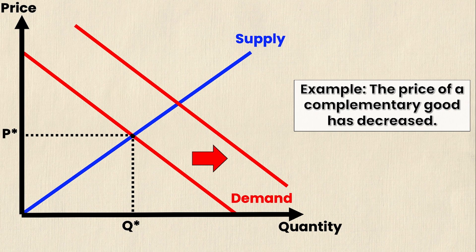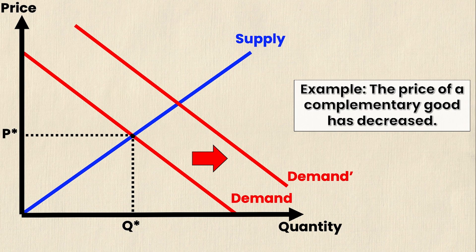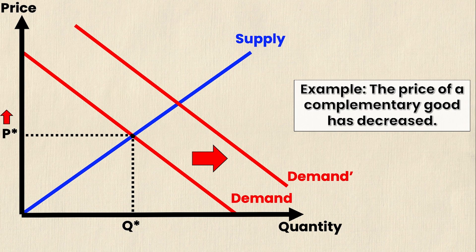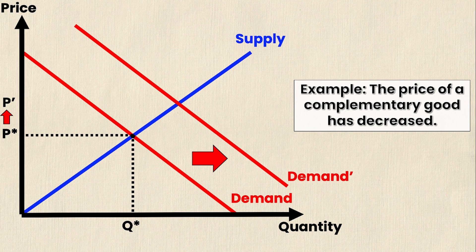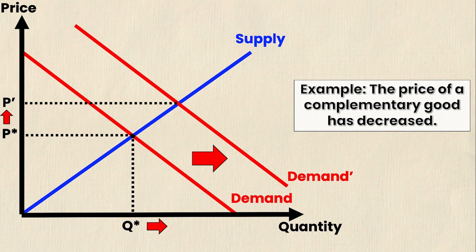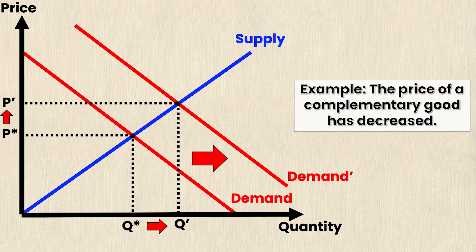We would denote this by demand prime and this just tells us that this is the new demand curve. Now you'll notice that P star has increased to P prime and if we follow this along to the new intersection it's right here. And you'll also notice that Q star has increased to Q prime and we can follow this up to the new intersection point where demand prime and supply intersect.